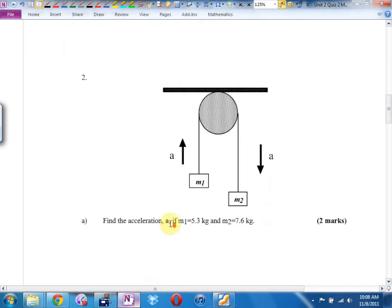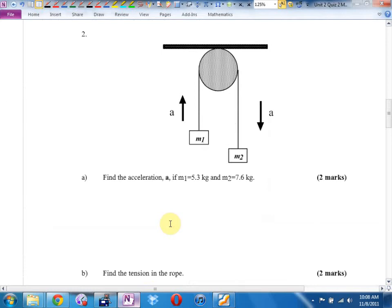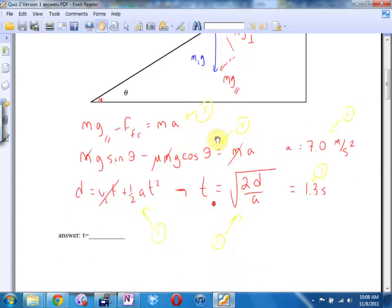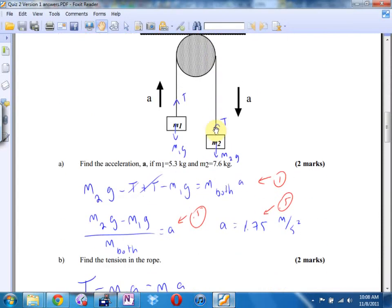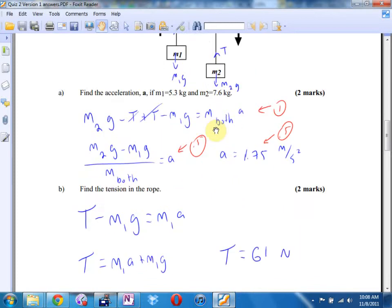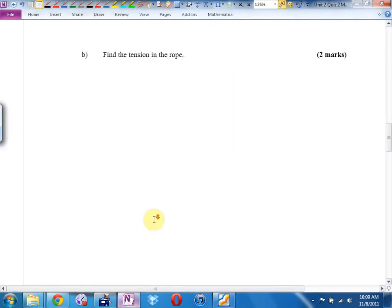Question 2. Atwood machine. Did they give me both masses? Then I'll treat this as one mass. I'll go winner minus loser equals mass of both times a. If they only give me one mass, they'll give me enough information that I can target that one mass and find all the other stuff. When I did that, I got an acceleration of 1.75 meters per second squared and I got a tension of 61 newtons. I used M1 because tension was winning and it was easier to get tension by itself.